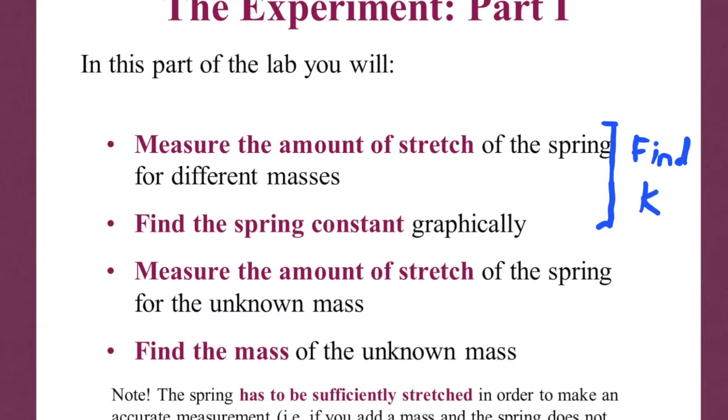Then we're going to pivot to part two, where we're going to be using an unknown mass, and we're going to take that unknown mass and the known k to find the mass. So we're going to then basically see how much it stretches and the known spring constant to figure out what the unknown force or the unknown mass happens to be. Let's look at how we're going to collect data for that.